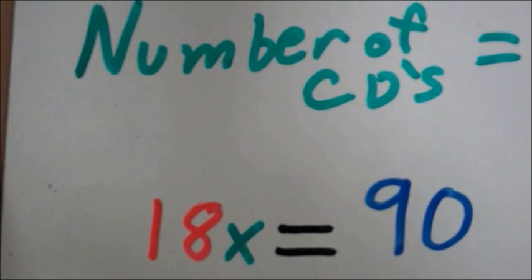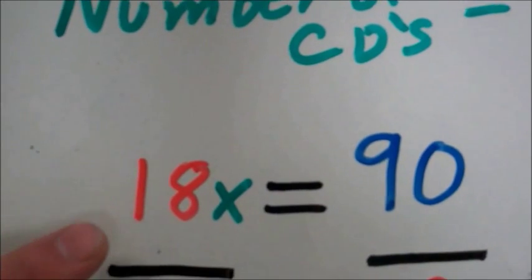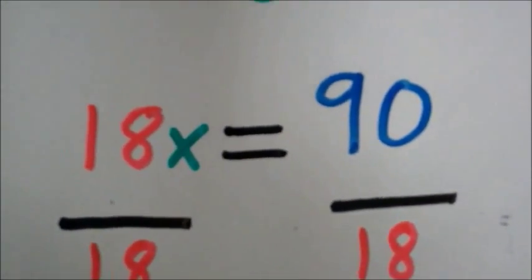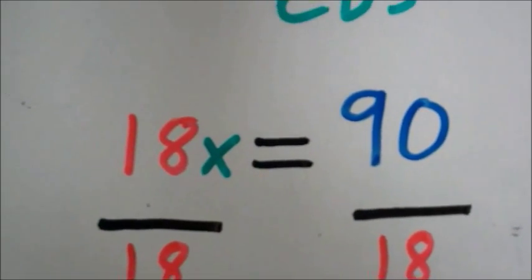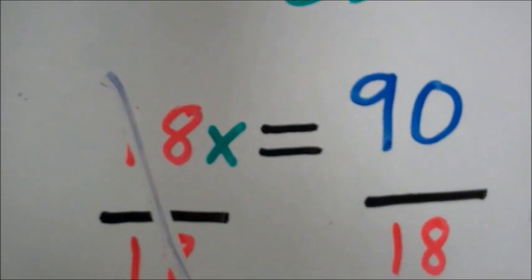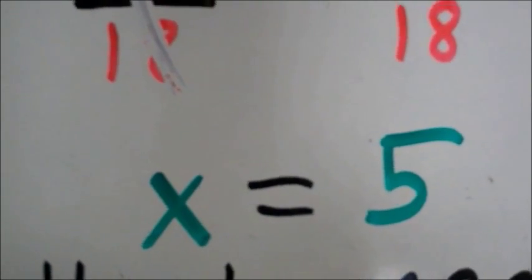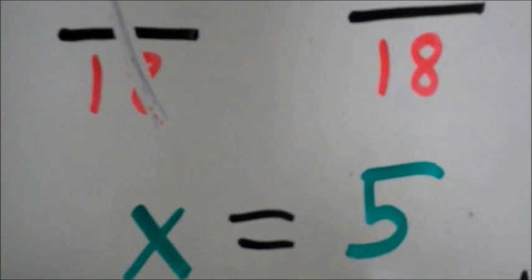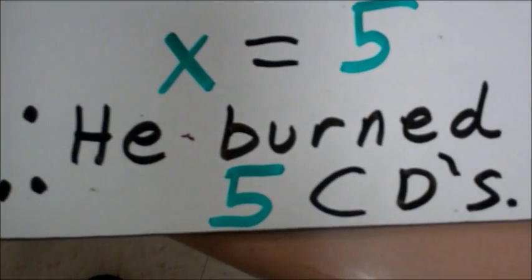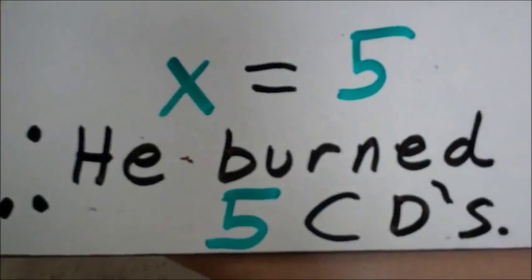Using the division property of equality, we have to divide by 18 the coefficient of x. Divide by 18 on both sides. Remember when we do this, 18 will divide out over here. And you're only left with x on the left side. Now x equals 5. What does that mean? Therefore, he burned 5 CDs.